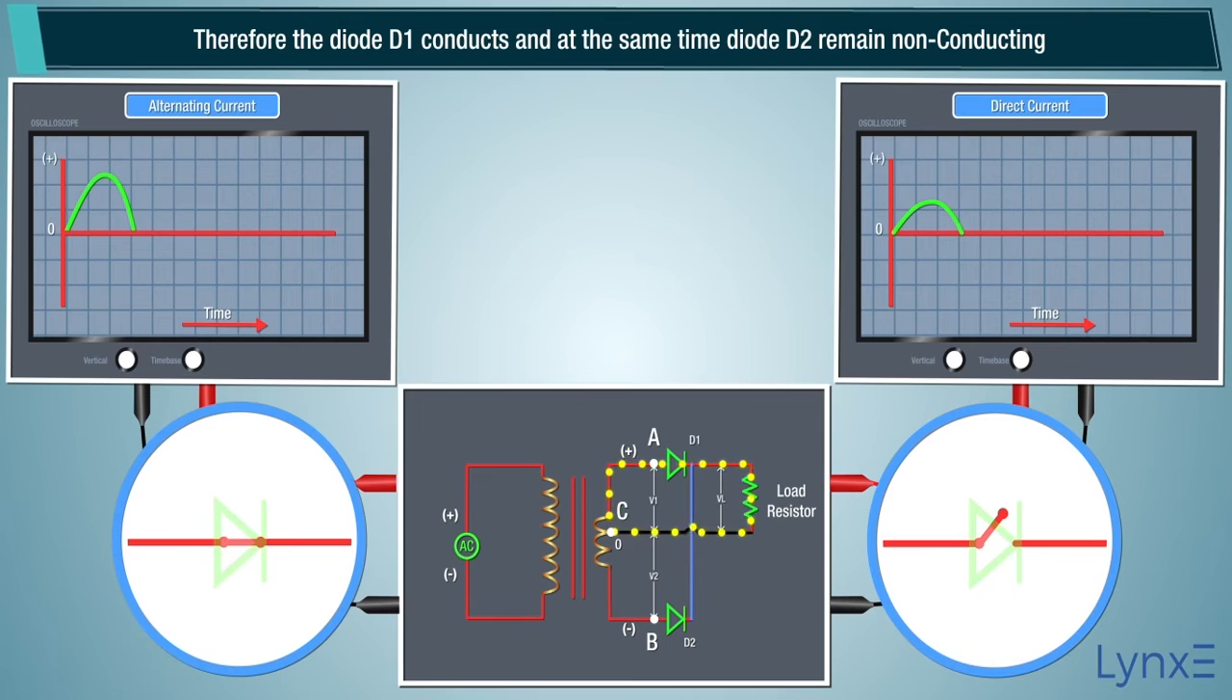Now diode D1 is forward bias, acts as a closed switch, and diode D2 is reverse bias which acts as an open switch. Therefore, the diode D1 conducts and at the same time diode D2 remains non-conducting.